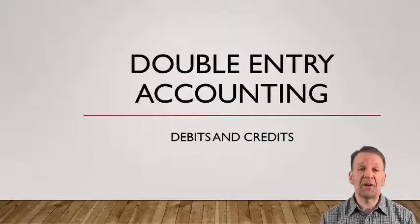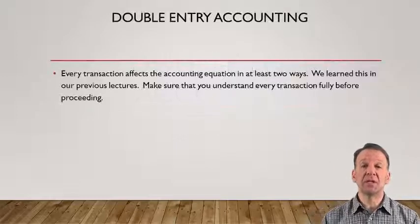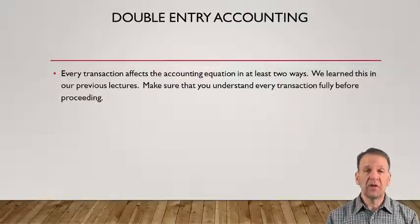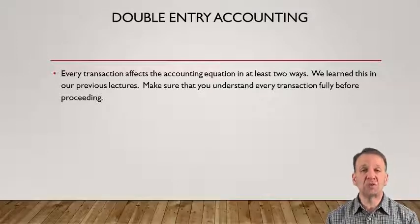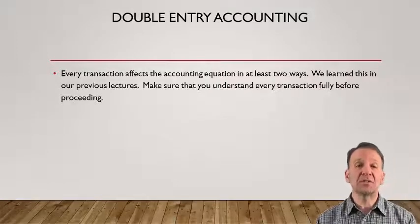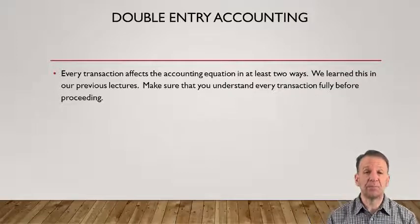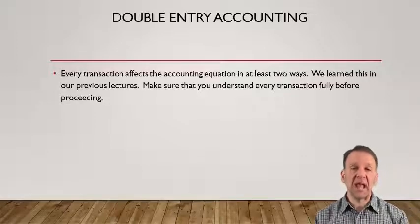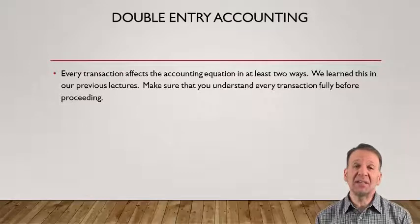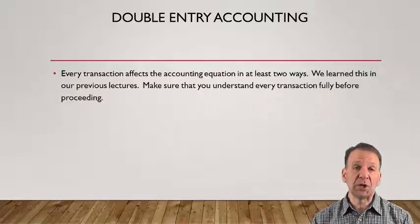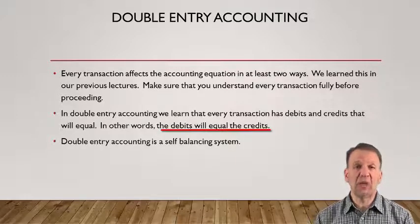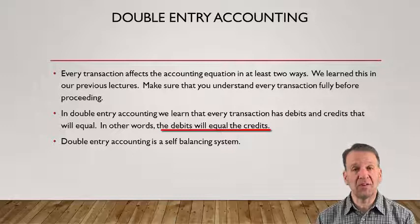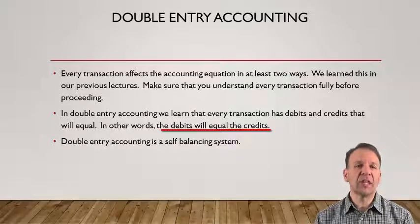In double-entry accounting, every transaction affects the accounting equation in two ways. You need to make sure you understand how transactions work before you continue with this lecture. If you are still struggling with transactions, you need to go back to the previous two videos and review them. Remember, in accounting, every transaction has at least two things happening. Now we will learn that every transaction has debits that will equal the credits. Accounting is a self-balancing system where debits always equal the credits.